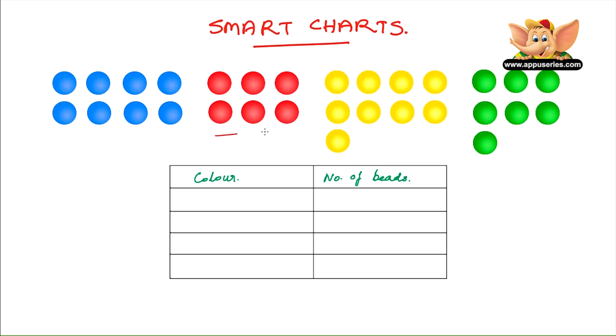So first let's count the number of beads of each color and we'll write it in a chart like this. We have six red beads, so that's color red, number of beads six.